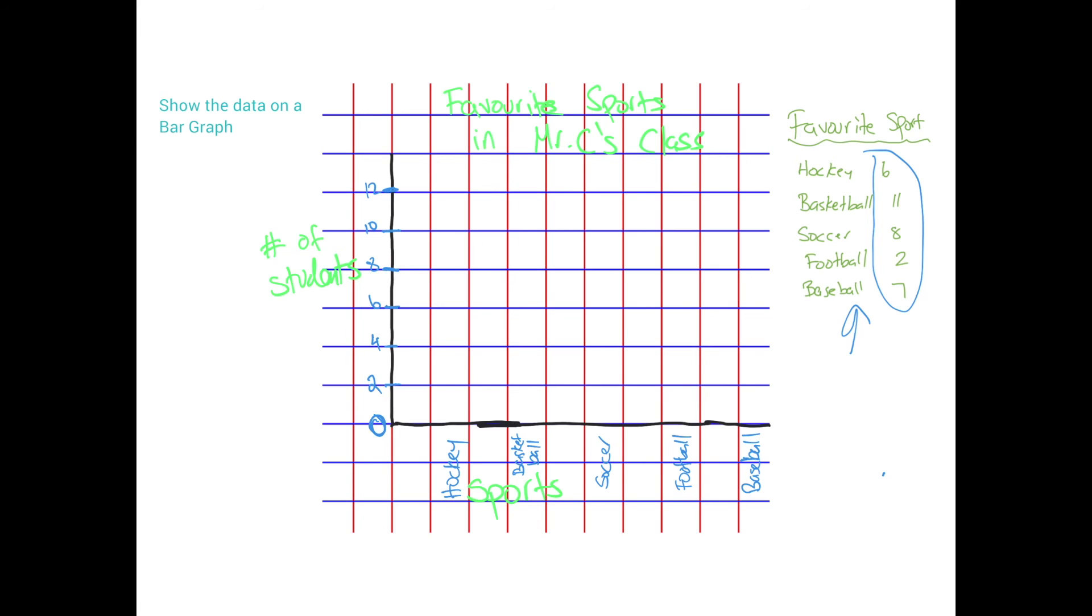Now it's time to actually plot the data. So hockey has six. You look here. Hockey is right over here. Six is right over here. So this is how we would graph it. You would do something like this.